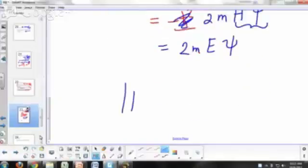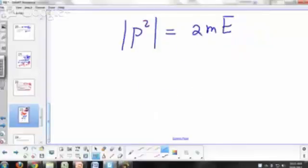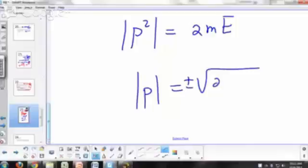So what are the allowed values of p squared then? 2 times the mass times the energy, right? So the allowed values of your momentum would be plus or minus square root of 2m E.